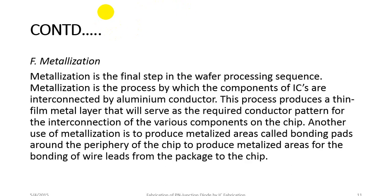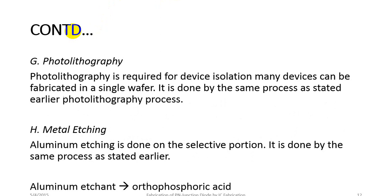The next step is metallization, the final step in the wafer processing sequence. Metallization is the process by which IC components are interconnected by aluminum conductors. It produces a thin metal layer serving as the conductor pattern for interconnecting various components on the chip, and also creates bonding pads around the periphery of the chip for wire bonding to the package. A second photolithography step is required for device isolation, followed by aluminum etching using orthophosphoric acid on selective portions.